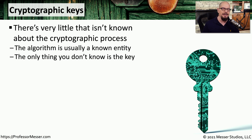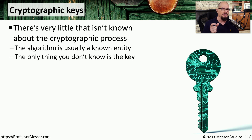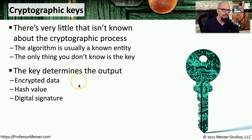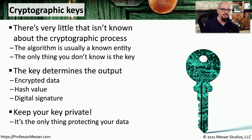Cryptography is an interesting science because it allows us to protect data. The process we use to protect data is well known by everyone — the algorithms and processes used to take plain text, convert it into ciphertext, and back to plain text are open and available for anyone to view. The one variable that people don't know is the encryption key, which allows us to encrypt data, hash information, and provide a digital signature. That's why it's so important to keep your private key private and make sure no one else can gain access to that very valuable key.